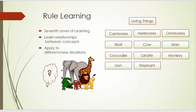Rule learning is the seventh level of learning, and it is learning relationships between concepts to apply them to new and different situations. For instance, if I know the information on the previous slide, I should be able, given sufficient information, to categorize these new animals.